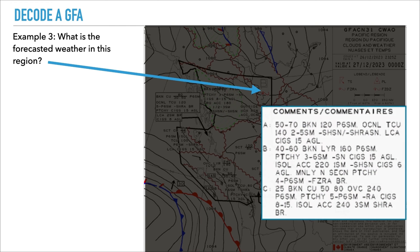If you go to the comment section, you can see that under comment Bravo, the base is between 4,000 to 6,000 feet. It's a broken layer that tops at 16,000 feet, with plus 6,000 miles visibility in patchy clouds. We have visibility between 3 to plus 6,000 miles caused by light snow.